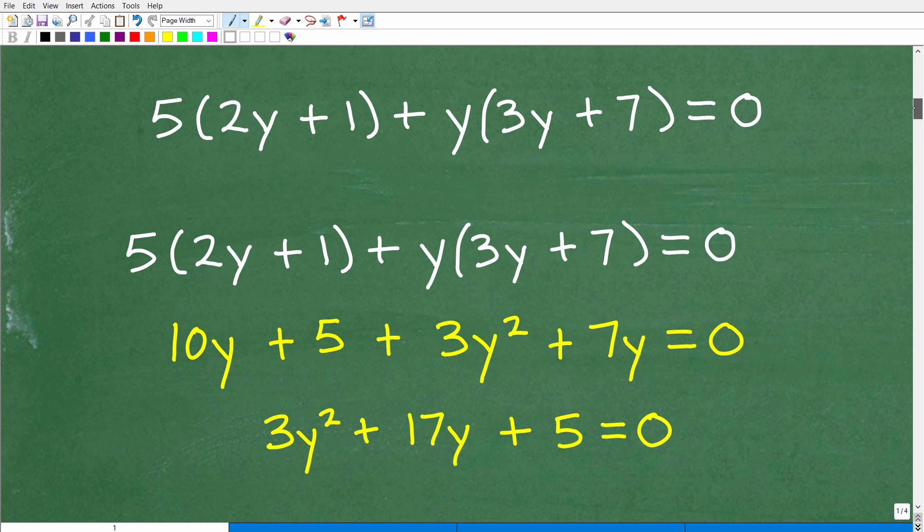All right, so here is our problem. Now, in its current form right here, you really can't really tell what's going on. Anytime in algebra you see things with a number or value outside of parentheses like this, you want to be thinking about the distributive property. So we want to distribute this 5 to these two inside terms, and then this y, we're going to do the same thing over here. So that's always our first move if you have parentheses in your equation. So when I do that, I'm going to end up with 5 times 2y is 10y, and then 5 times 1 is 5, plus y times 3y is 3y squared, and then y times that 7 is 7y.